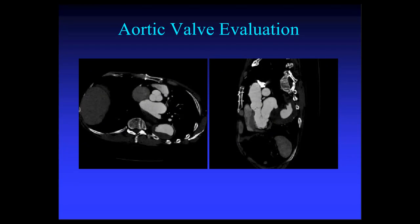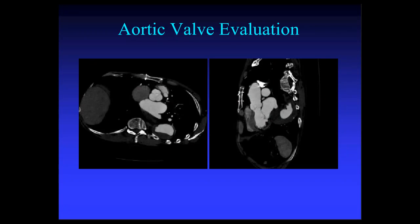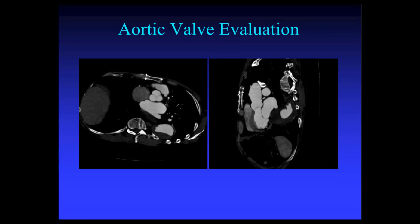Some of the standard views we will use, besides the axial oblique imaging, include a left ventricular outflow tract view on the left — a very important and helpful view of the aortic valve, particularly its relationship to the anterior leaflet of the mitral valve. These anatomic relationships are important for surgeons and referring physicians for evaluation of the aortic valve.